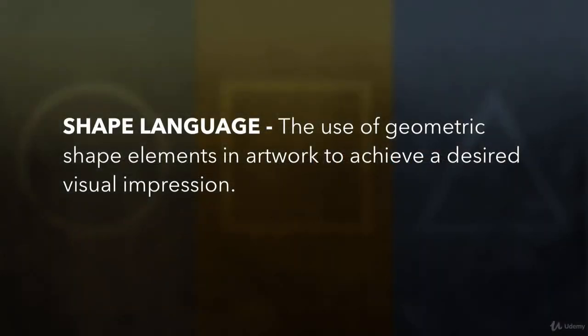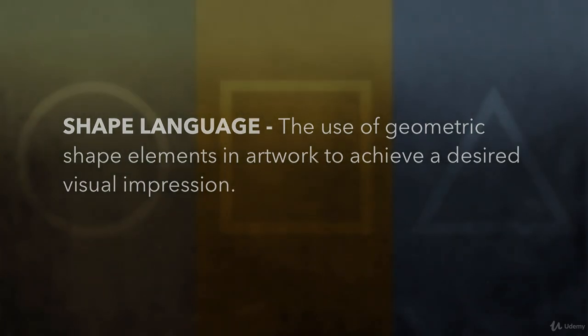Shape language is the use of geometric shape elements in artwork to achieve a desired visual impression. If we know how certain shapes communicate certain ideas, we can use shape language to make our viewers feel a certain way about our artwork. This can be incredibly useful in character, creature, and machine design.